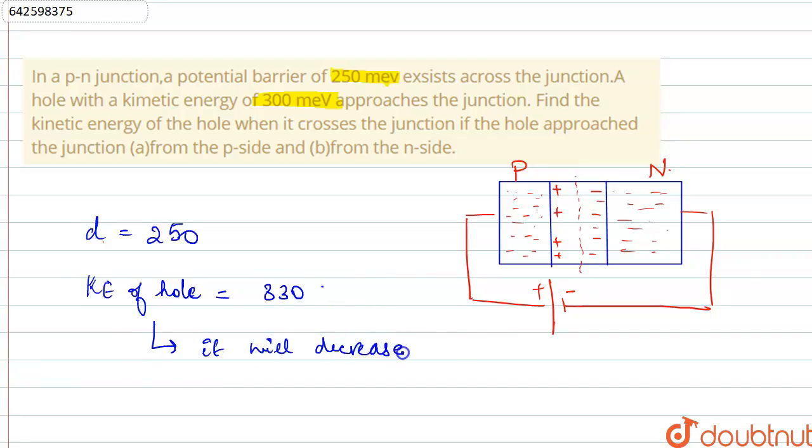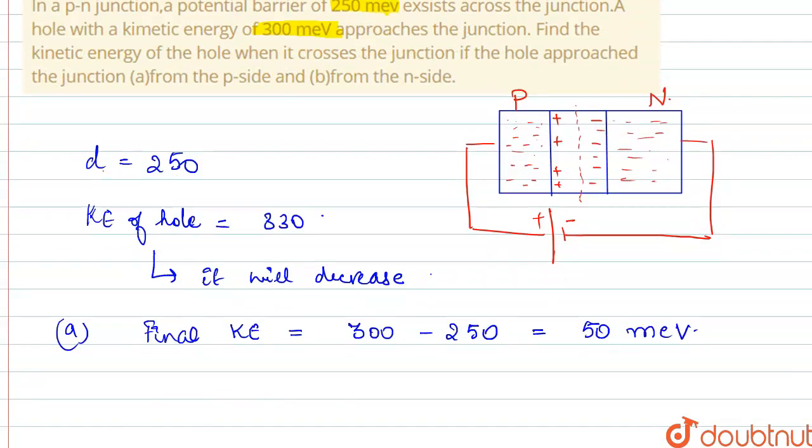Had it been reverse bias, it would have increased, right? So now from the p-side, final kinetic energy will be 300 minus 250, so that will be equal to 50.